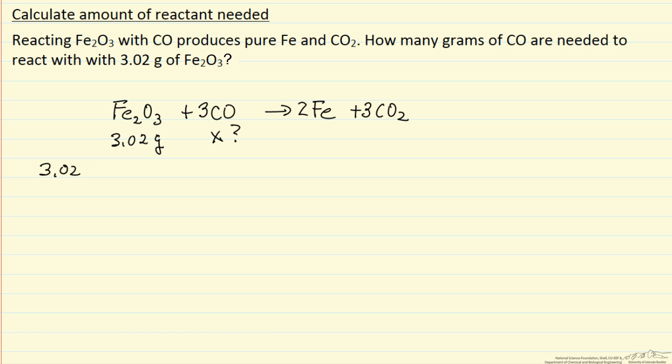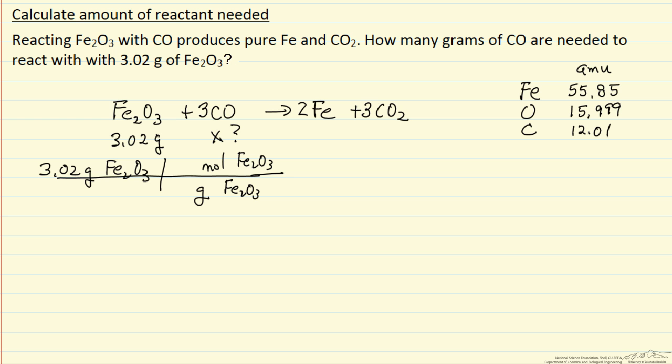So 3.02 grams of iron oxide. What I need is how many grams per mole - how many grams of iron oxide per mole of iron oxide. That's the first calculation. So let me look up iron, oxygen, and carbon atomic masses in a periodic table.